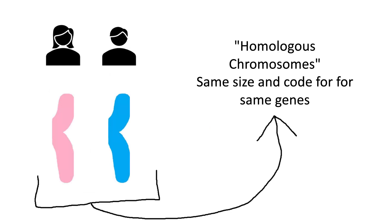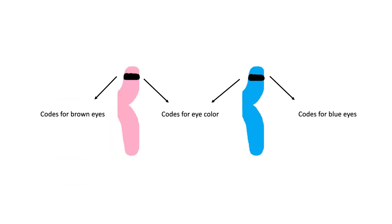For every chromosome you receive from your mother, you have one of the same kind of chromosome from your father. These two chromosomes are homologous, meaning that they code for the same traits. For instance, both may have a gene coding for eye color. However, how these chromosomes code for that trait may be different - one could code for blue eyes and the other for brown.